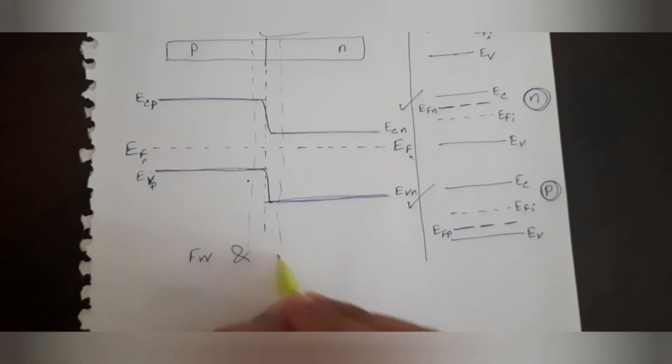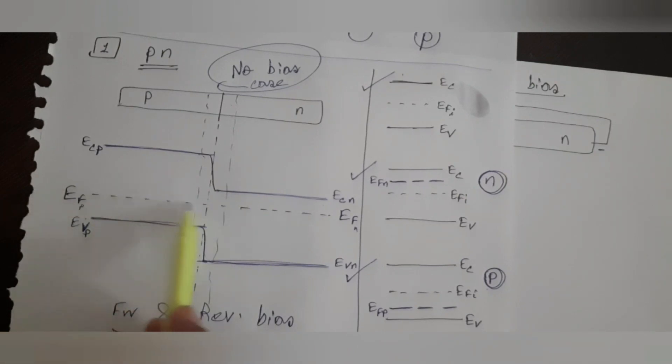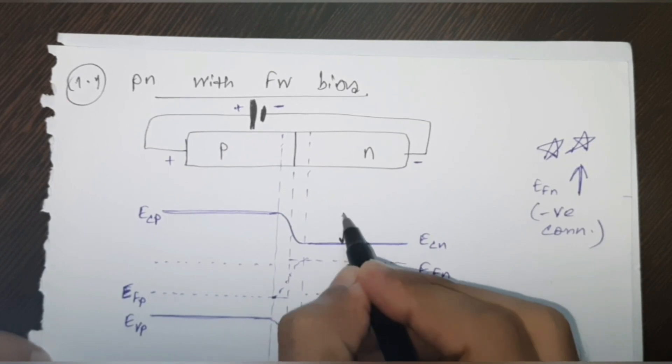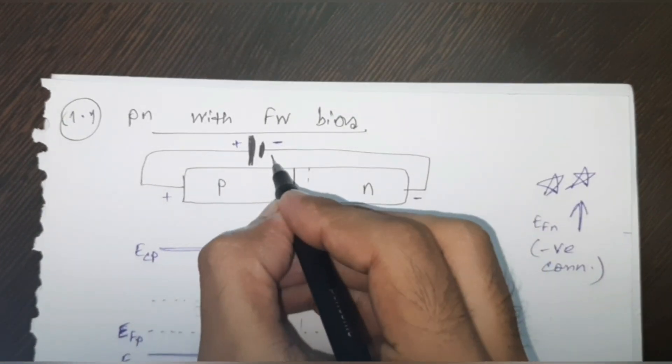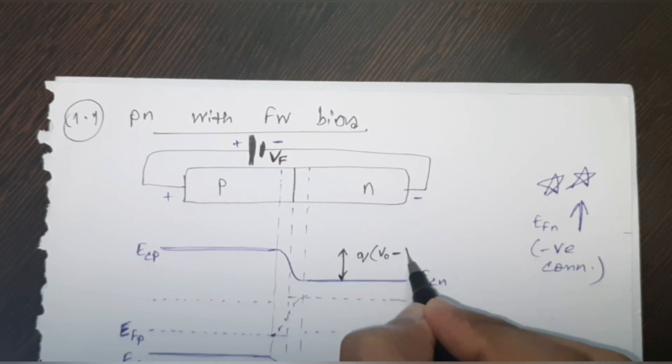Now, what changes come in the energy band diagram when we apply a battery to the PN junction? We shall study the forward bias and reverse bias cases. In the forward bias case, comparing with no-bias: when no battery was connected, the Fermi levels for both P and N sides were aligned at the same level. But here, one side is connected to positive and the other to the negative terminal. The hack is: the side connected to the negative terminal — its Fermi energy level will go up. Since the negative terminal is connected to the N side, EFN will go up.